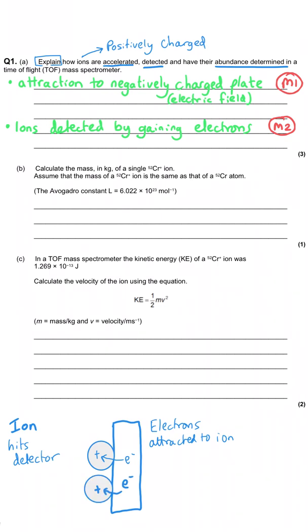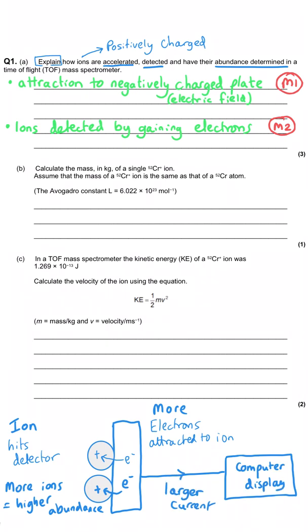Now the number of electrons that are gained depends on the abundance of the ions that is hitting the detector. So if more ions hit the detector, more electrons will be transferred to those ions, and so we will be getting a larger current. And so we can just say that the current that is generated is proportional to the abundance of that ion. And so each of my three bullet points that I've written at the top is worth one mark each.